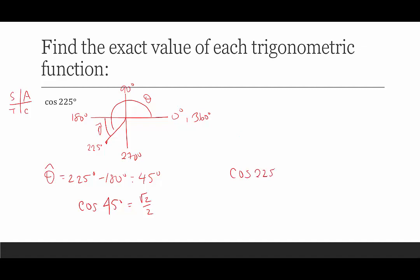To review the steps: first, sketch the angle to see where it terminates. Then refer to the ASTC chart to decide positive or negative. Next, find the reference angle. Then evaluate the trig function of the reference angle. Finally, apply the correct sign based on the quadrant.